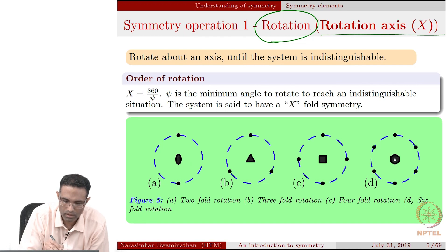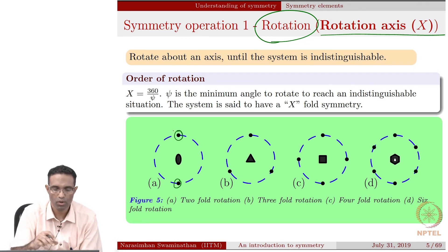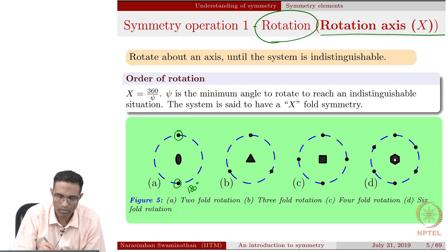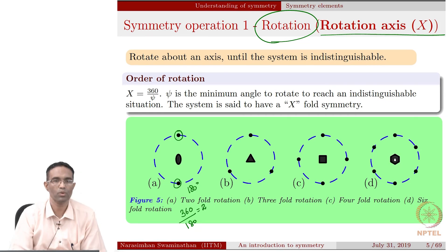For example, if you take this molecule, there are two atoms here. By how much, what angle should I rotate it, so that this is indistinguishable? 180 degrees. So 180 degrees if I rotate it, it becomes indistinguishable. This is called a two-fold rotation because 360 divided by 180 is 2. This object possesses a two-fold rotation symmetry. And once again if you rotate it, it is the same thing again. There is no difference between what you started off with and what you end with. This is a two-fold rotation.